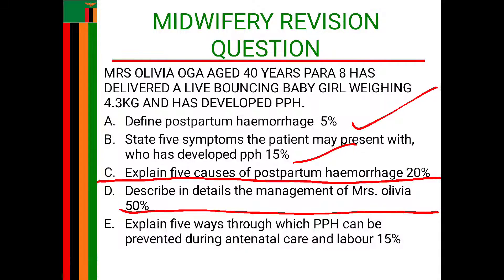The last heading under arresting hemorrhage is ruptured uterus. In case the client has a ruptured uterus, I will prepare Mrs. Olivia for emergency hysterectomy to quickly arrest the hemorrhage. Apart from that, I will do hemoglobin estimations to rule out anemia, do grouping and cross-matching to identify the client's blood type in case blood transfusion is needed, check clotting time and bleeding time, insert a nasogastric tube to aspirate gastric contents to prevent aspiration pneumonia, and carry out all physical preparations in readiness for emergency surgery.